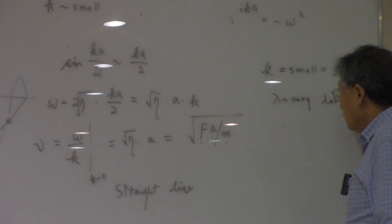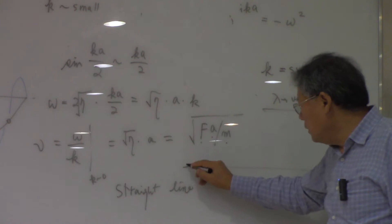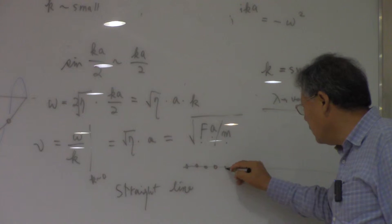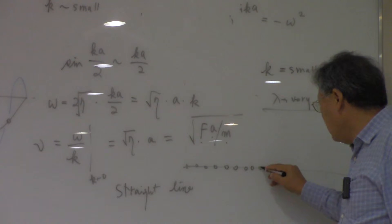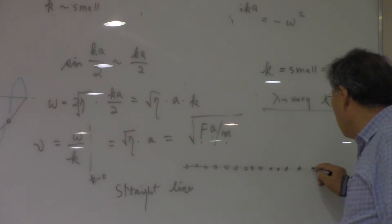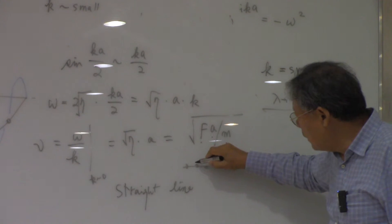What does that mean, lambda is very large? The atoms are sitting here like this, and when the lambda is very large, it means all atoms are moving in the same direction.